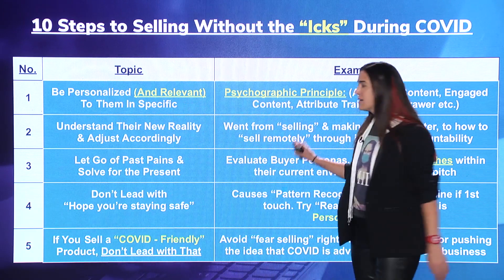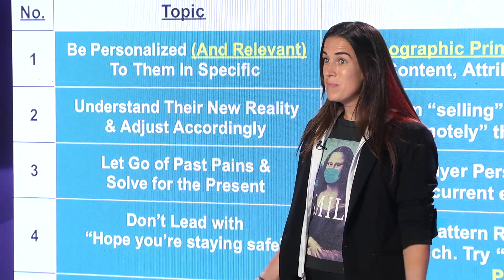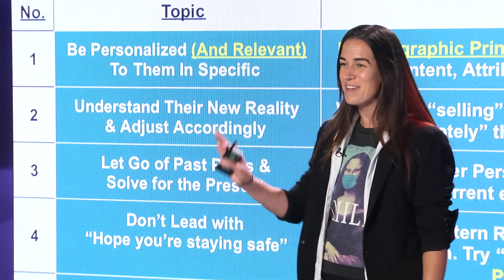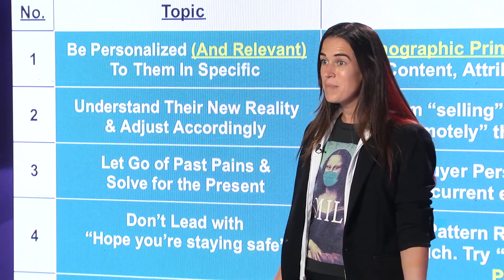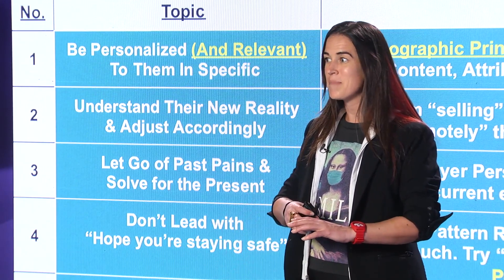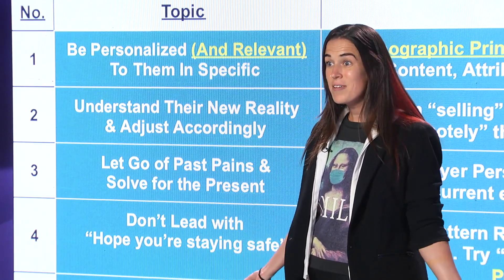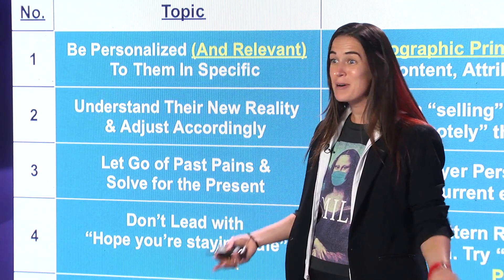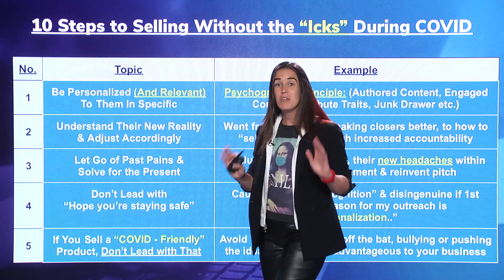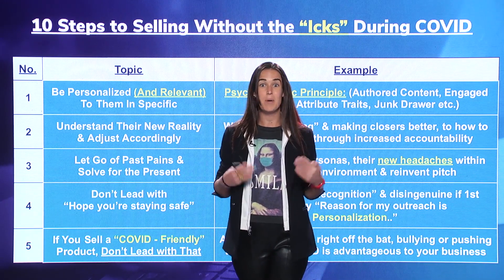Number three: let go of past pains and solve for the present. Things that were a very big pain in the past are not necessarily a pain now. For example, someone who had a lot of pain with printing things in the office — now they don't have a printer, they're at home. It's a completely different world. You need to let go of what your buyer was dealing with and not hold on to the fact that that is necessarily what matters to them anymore.